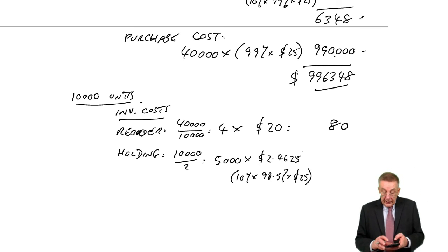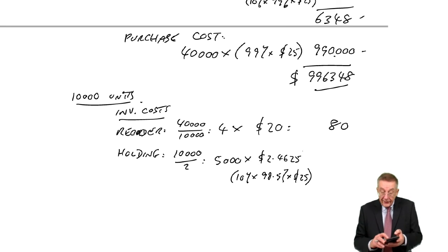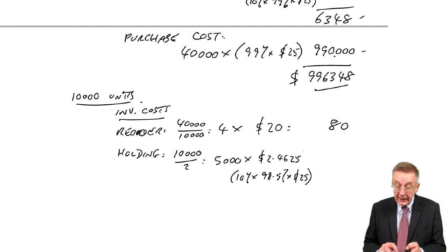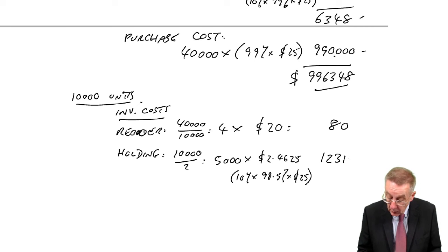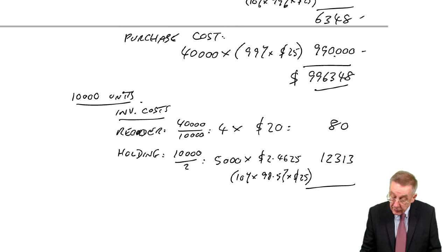I hope that's right, 10%, 98.5% of 25, yeah. And 5,000 units, the average inventory, it's $12,313. So as we said, the inventory costs are massively higher, $12,393.